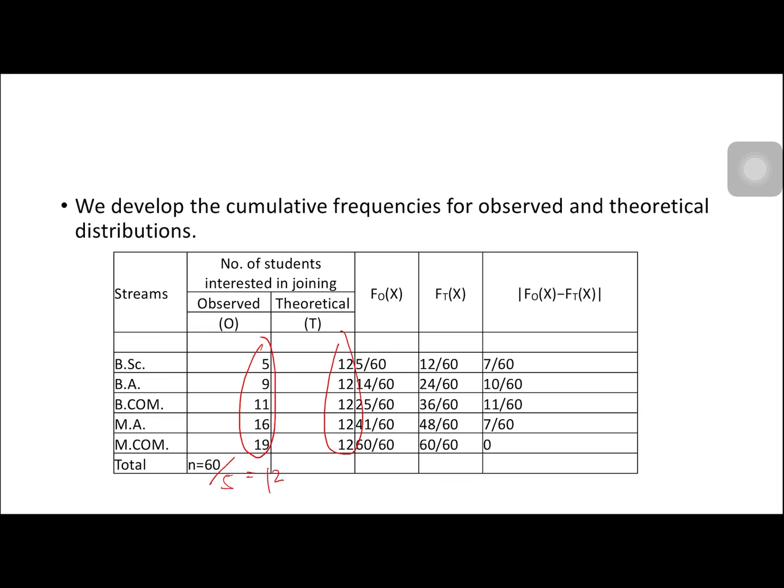For F0(X), we have 5 over 60. Then, 5 plus 9, we have 14, so 14 over 60. Then, 14 plus 11, we have 25, so that's 25 over 60. And then, 25 plus 16, we have 41, that would be 41 over 60. And then, 41 plus 19, we have 60, so that's 60 over 60.